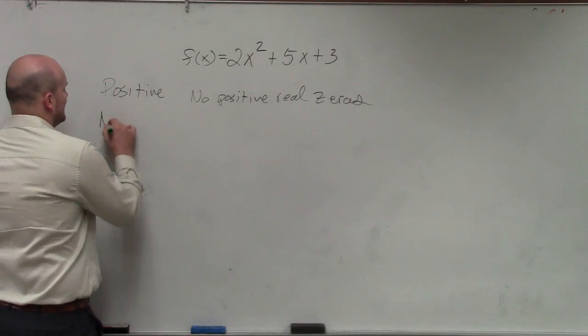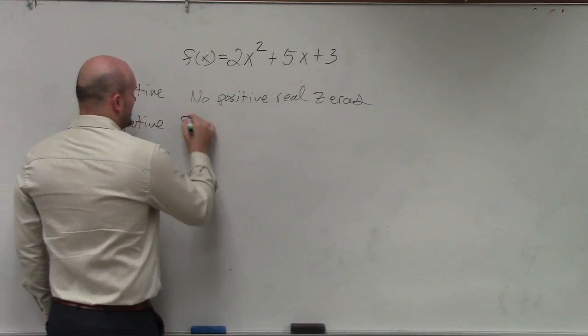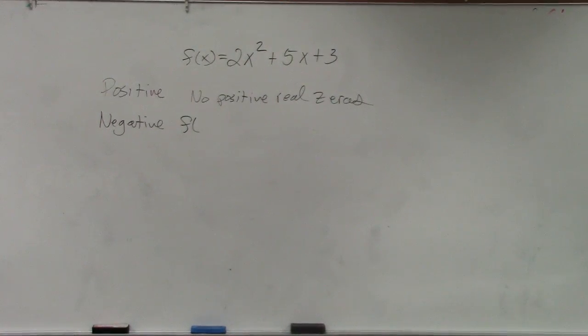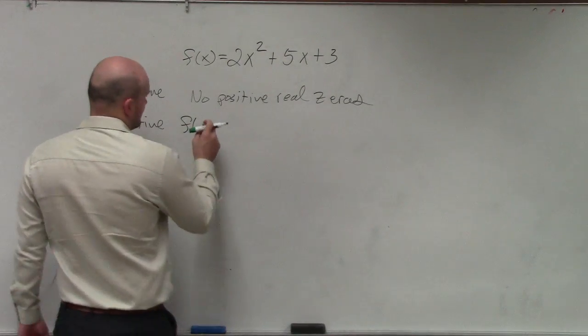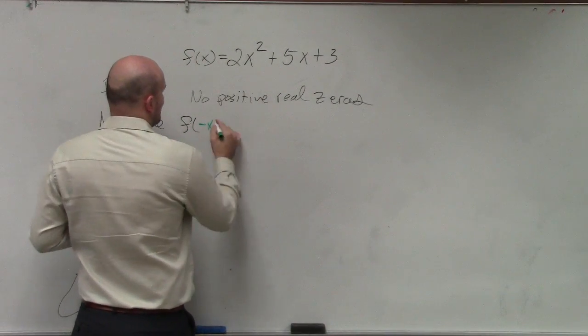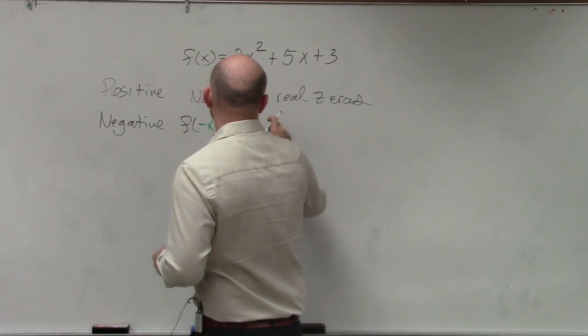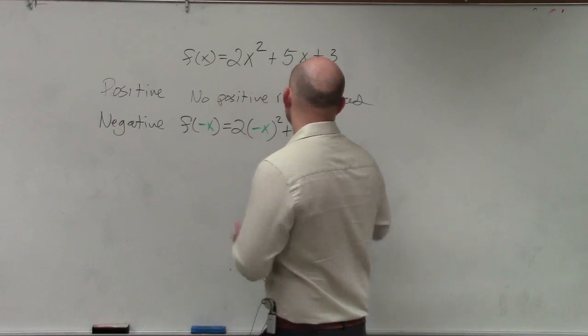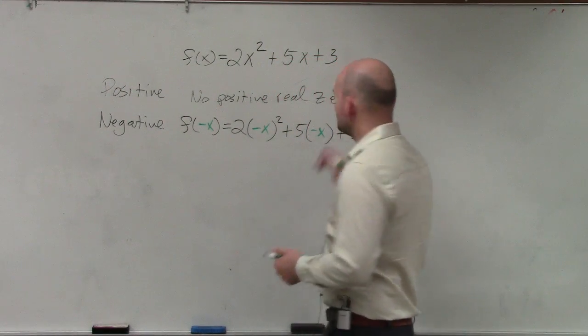No positive real zeroes. To find the negative, what we need to do is figure out what is f of negative x. Well, we'll go and see. f of negative x. So that gives you 2 times negative x squared plus 5 times negative x plus 3.